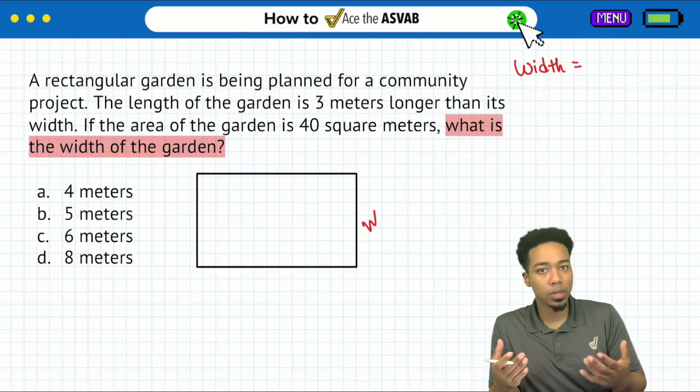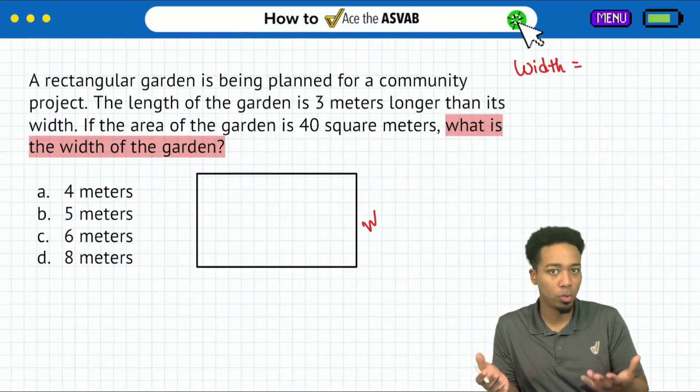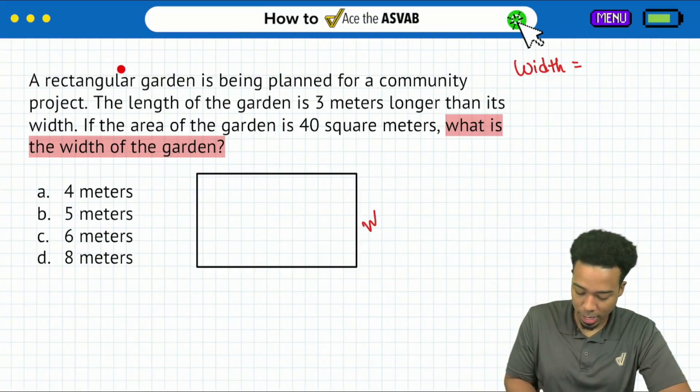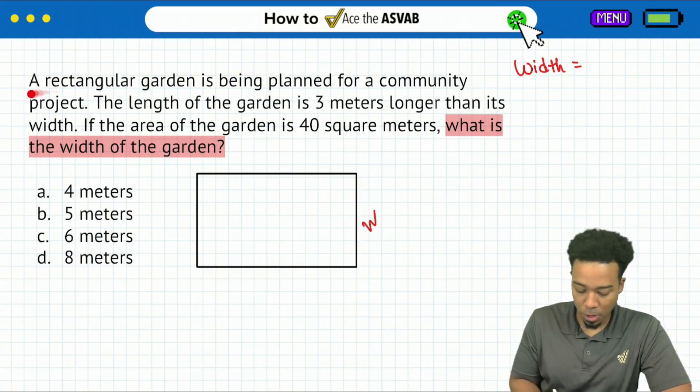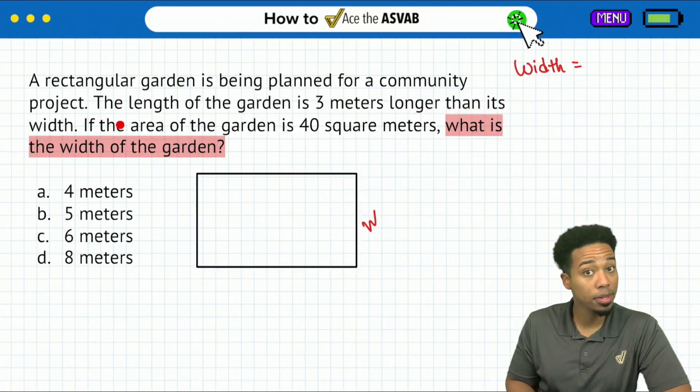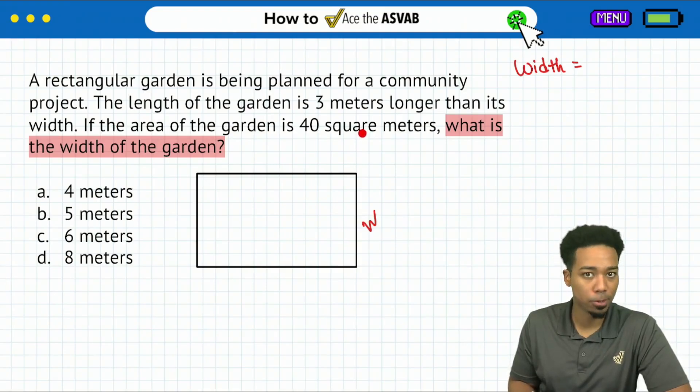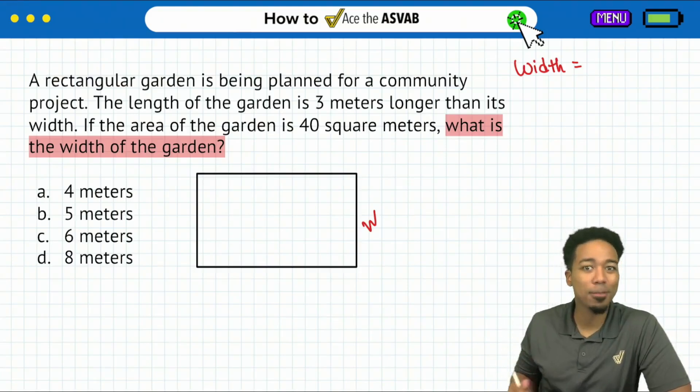Next, what are we going to do? Well, let's read through the information just like we started doing. We know it's a rectangle and it's being planned for a community project. Next, the length of the garden is three meters longer than its width and the area of the garden is 40 square meters. So what do we do? Well, let's take that information down.